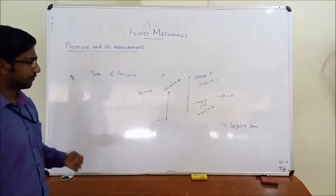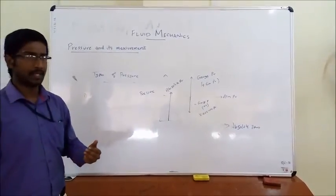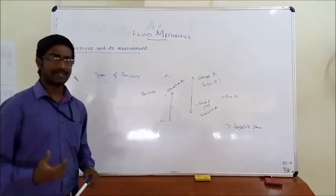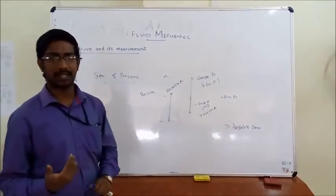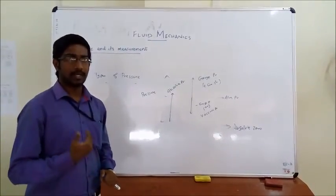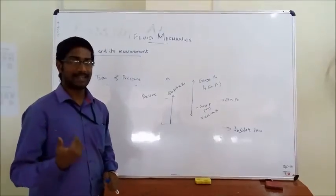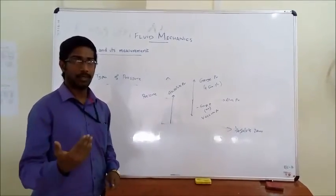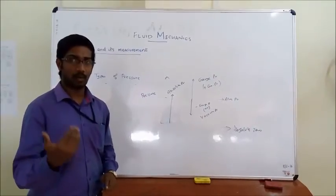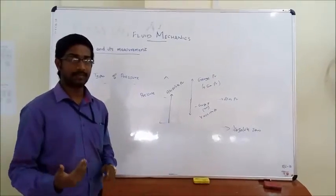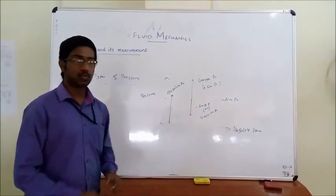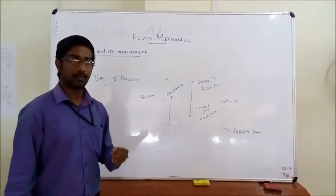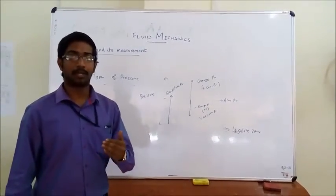Before going into the next topic, let me say some points about atmospheric pressure. Atmospheric pressure is the force or pressure exerted by the atmospheric air on the body it is in contact with. It is calculated using a barometer, so atmospheric pressure is also known as barometric pressure.